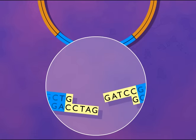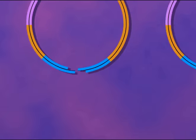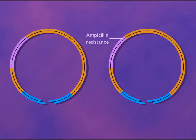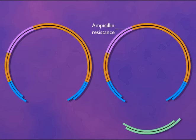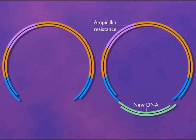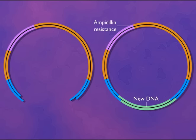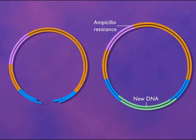When the plasmid vector and foreign DNA are both cut with the same restriction enzyme and mixed together, not all molecules will join to form recombinants. Some vector molecules will re-anneal without incorporating foreign DNA.